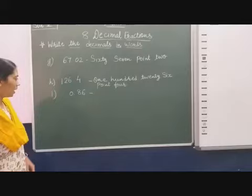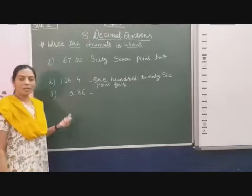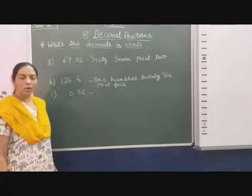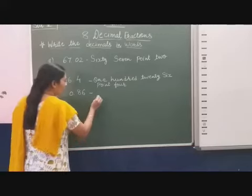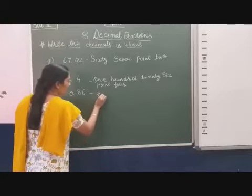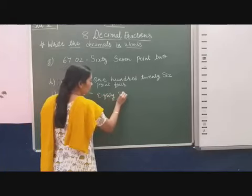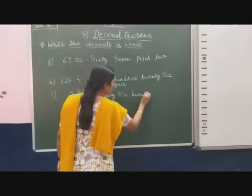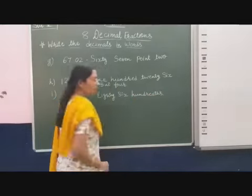And the last question is given 0.86. So when in this decimal number is given 0, then we will not mention in the word. So we will write that 86 hundredths.